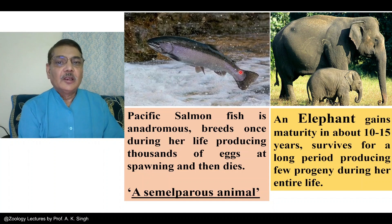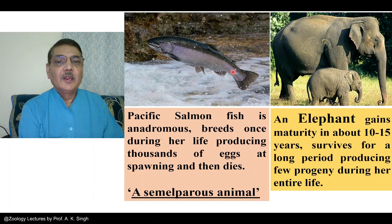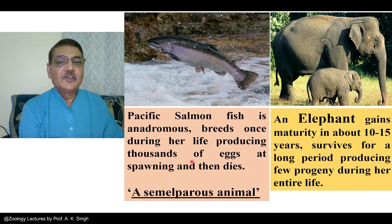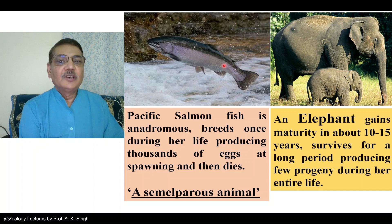This fish is found in oceanic areas, in marine conditions. It takes four to five years to become completely mature. After gaining maturity, it will migrate to rivers where it will spawn. As I just mentioned, it lays thousands of eggs once in its lifetime, and then it dies.